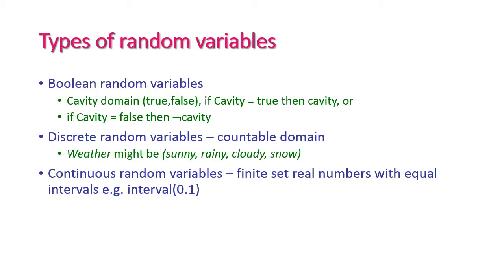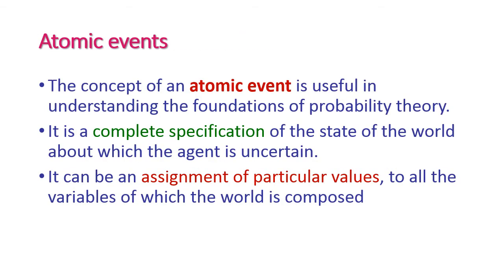The third type is a continuous random variable, where we have a finite set of real numbers with equal intervals. We can take any interval based on our application or domain. For example, if X is a random variable we can write X ≤ 2.5.